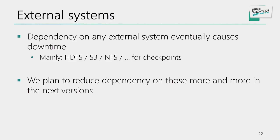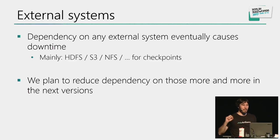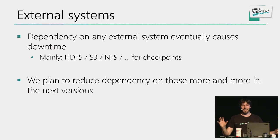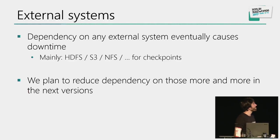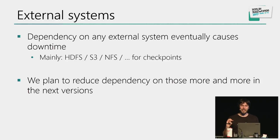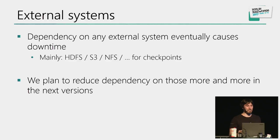We've realized that dependency on any external system eventually causes avoidable downtime. The snapshots Flink takes must go somewhere — most often HDFS, S3, or NFS. You'd think these are reliable, but that's not always the case. When S3 had its downtime a while ago, half the internet stopped working — and we got a flood of emails saying Flink clusters on Amazon failed to checkpoint because S3 was down. Since then, we've changed our mindset to make Flink as independent as possible from these dependencies while still exploiting them when they work.